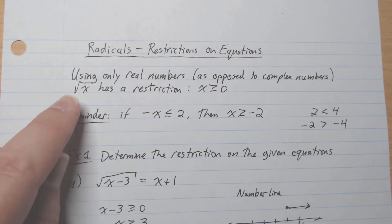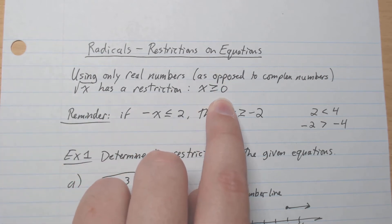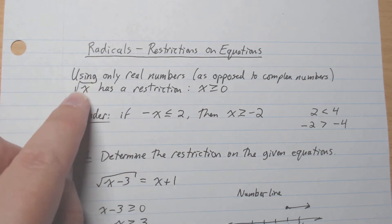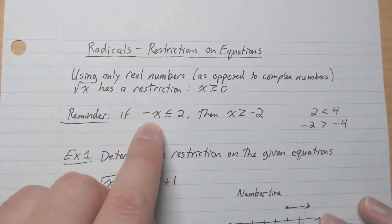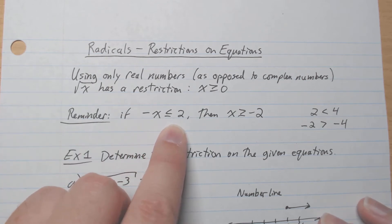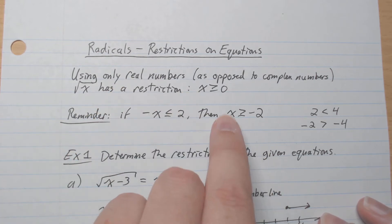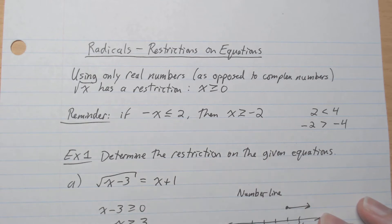Using real numbers, root x has a restriction of x being greater or equal to 0. Whatever is underneath the square root must be greater or equal to 0. Just a reminder: if we have negative x less or equal to 2, then multiplying both sides by negative 1, x becomes greater or equal to negative 2. So the sign flips.